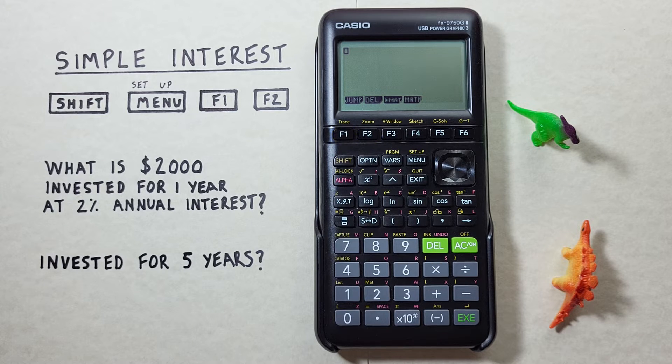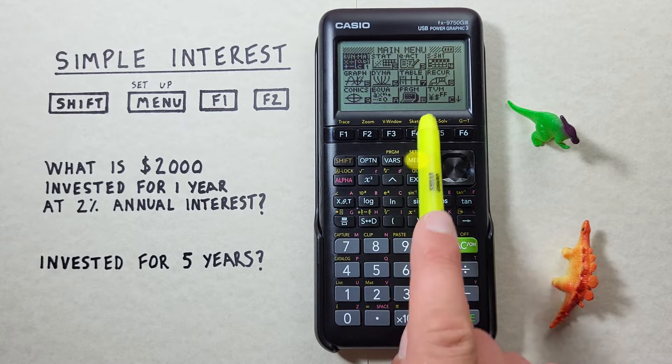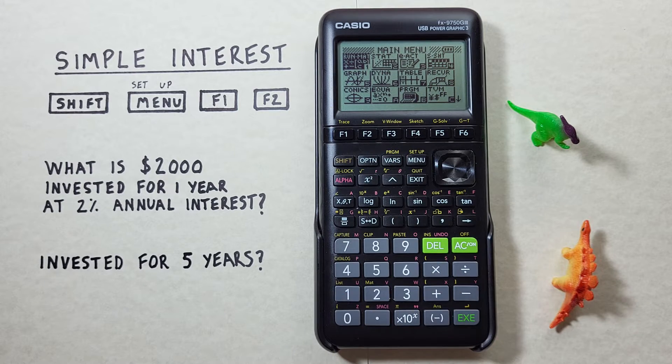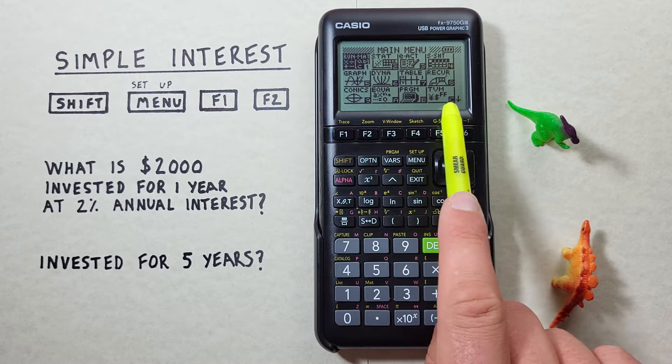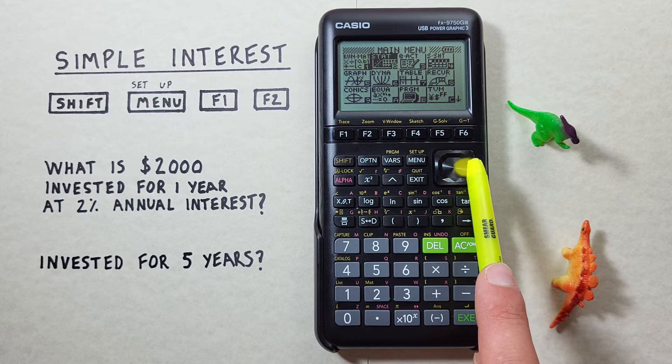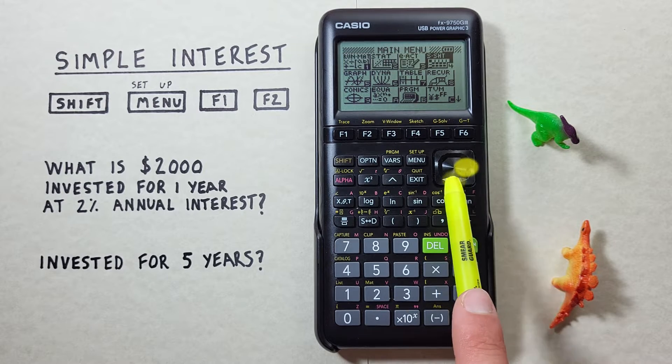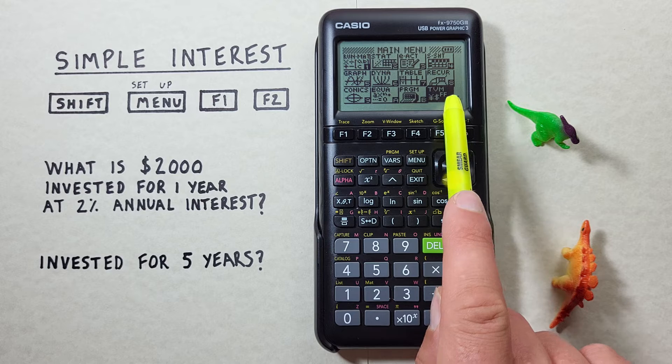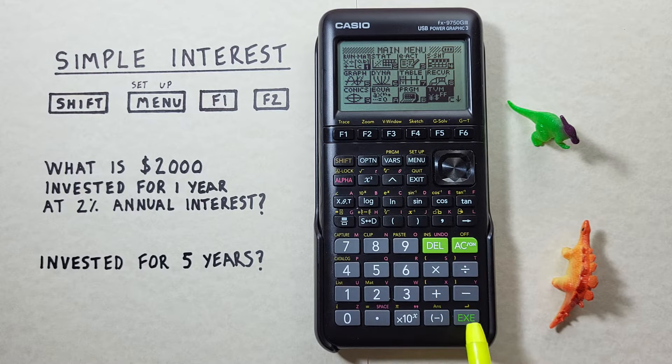Simple interest is generally an easy calculation to do but there is an app for it on this calculator. To get there we press the menu key so that we're at the main menu and then we want to scroll down to the TVM option here. So we scroll over and down till it's highlighted and then we press the EXE key.